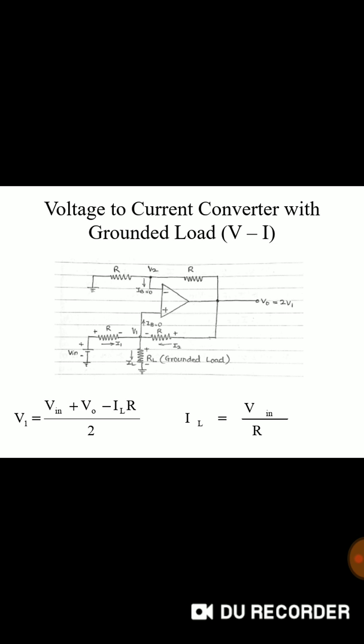Applying KCL at node V1 we can write that IL is equal to I1 plus I2 converting into respective values of V and R. I1 is equal to VIN minus V1 upon R and I2 is equal to VO minus V1 upon R. Putting those values we can finally get V1 is equal to VIN plus VO minus IL into R upon 2.